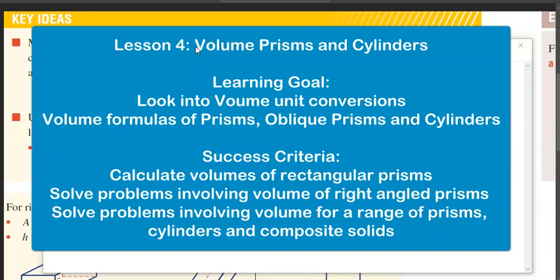This is lesson four, volume prisms and cylinders, and this can be found within the total surface area and volume topic. The learning goal for this one is to look into volume unit conversions and the volume formulas of prisms, oblique prisms, and cylinders. The success criteria is to be able to calculate volumes of rectangular prisms, solve problems involving volume of right angle prisms, and solve problems involving volume for a range of prisms, cylinders, and composite solids.